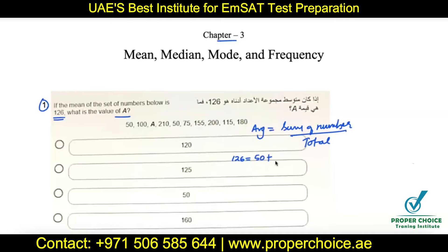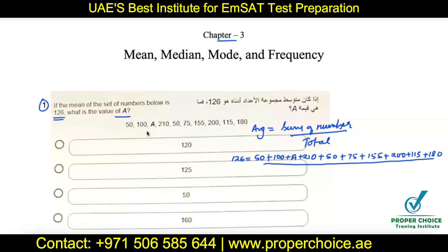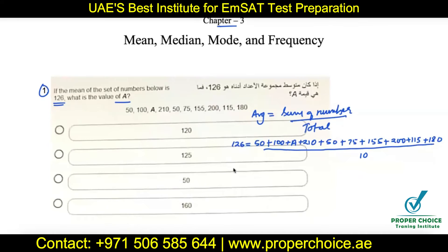Let me rewrite it: 126 equals 50 plus 100 plus a plus 210 plus 50 plus 75 plus 155 plus 155 plus 200 plus 115 plus 180, all divided by the total count. Counting them: one, two, three, four, five, six, seven, eight, nine, ten — there are 10 numbers total. Only 'a' is unknown. Adding the known numbers gives us 1135 plus a, divided by 10.